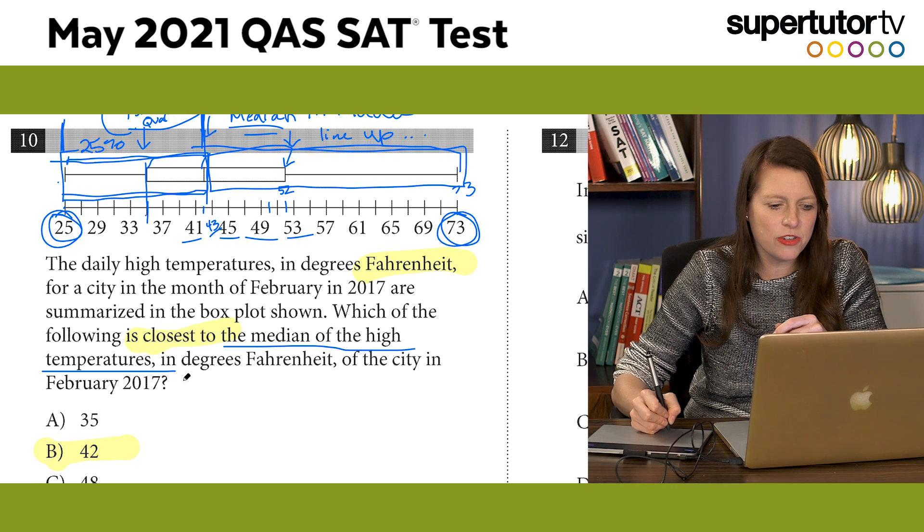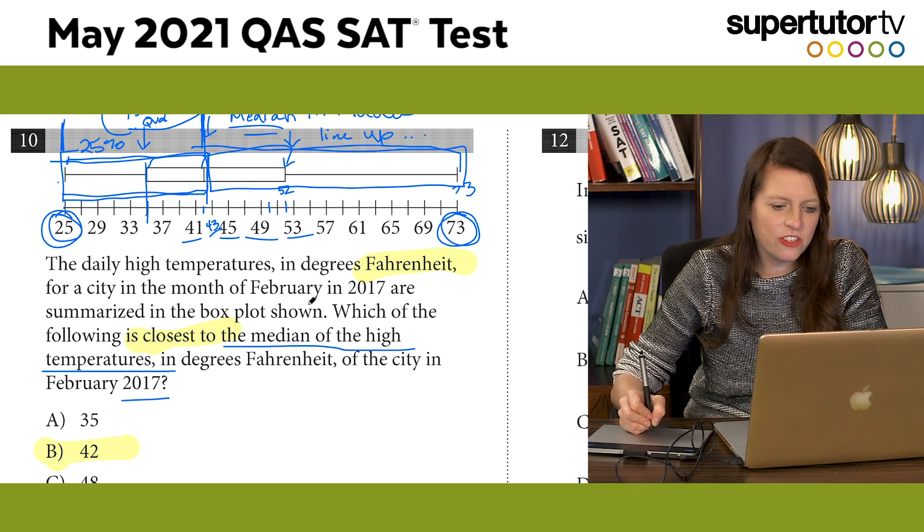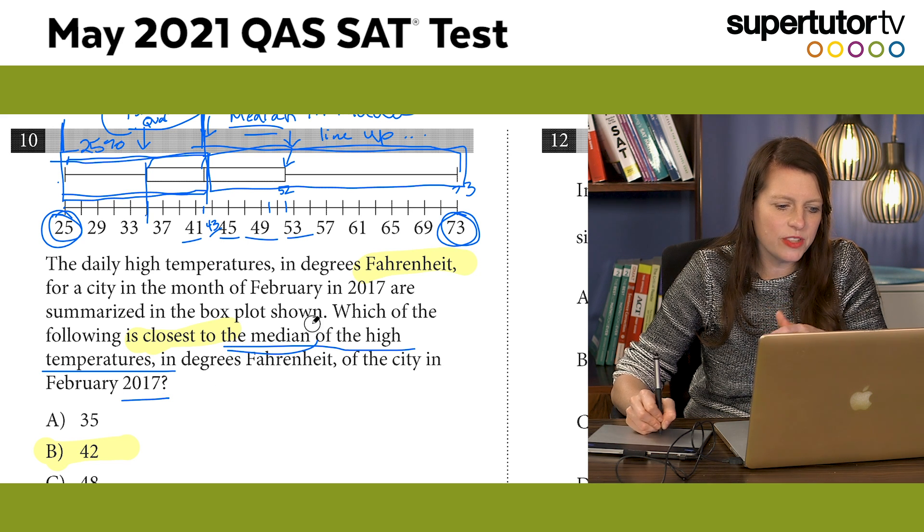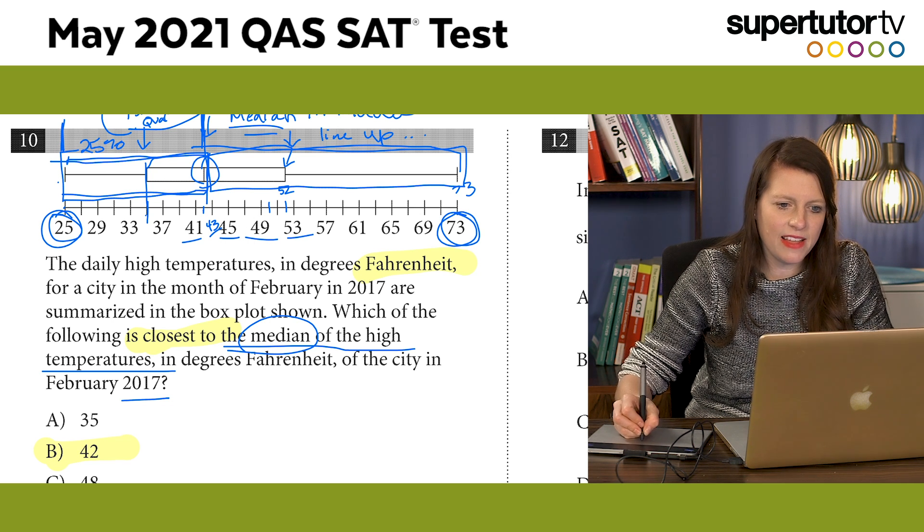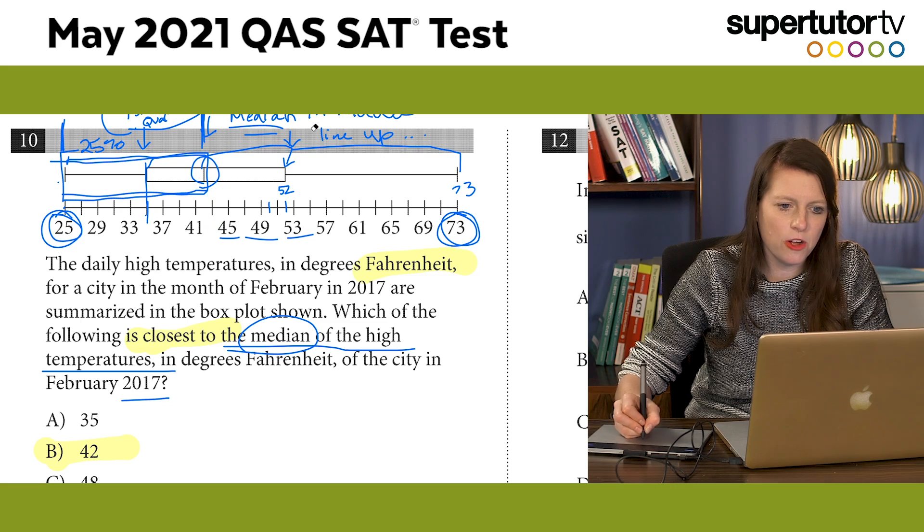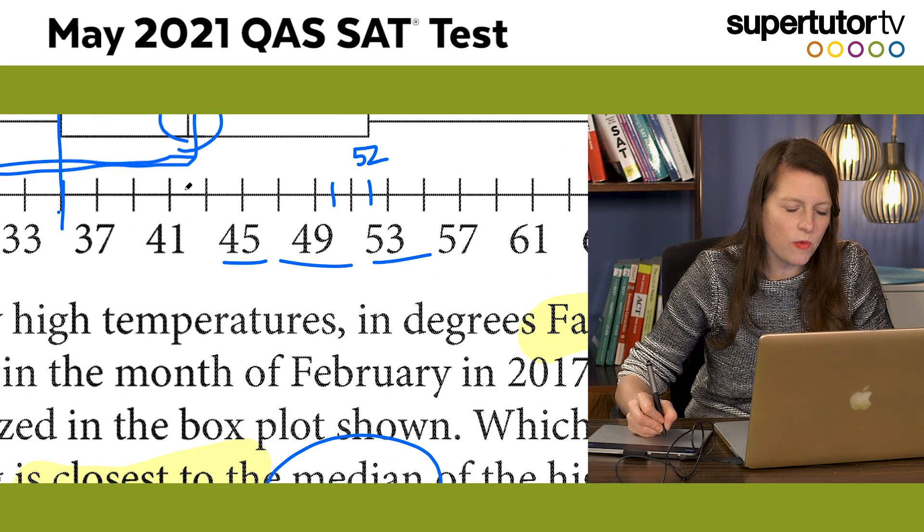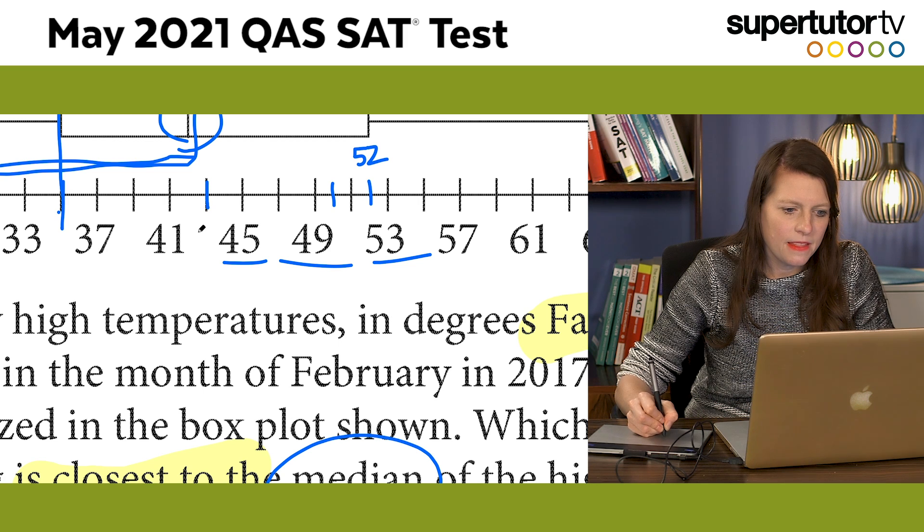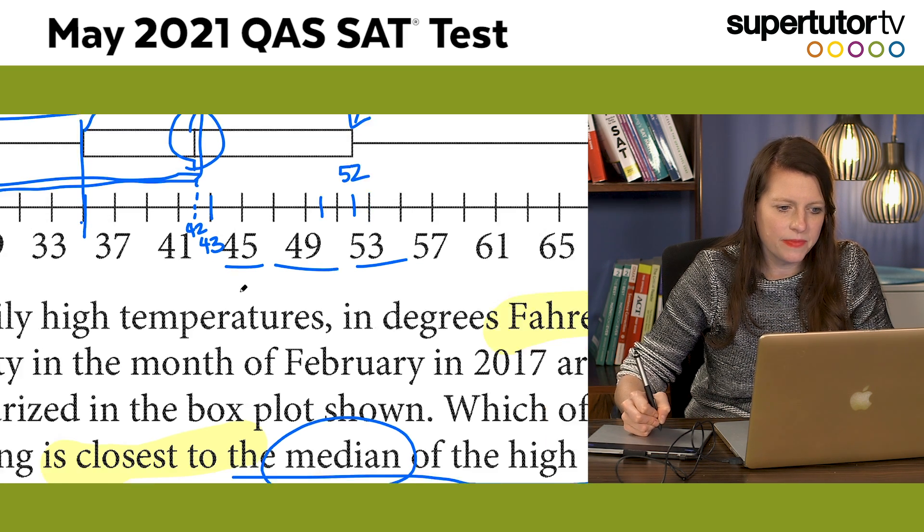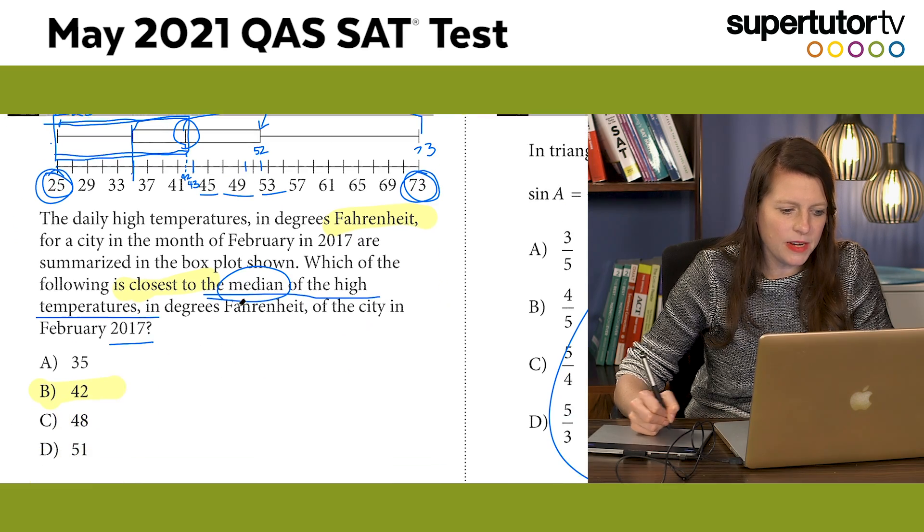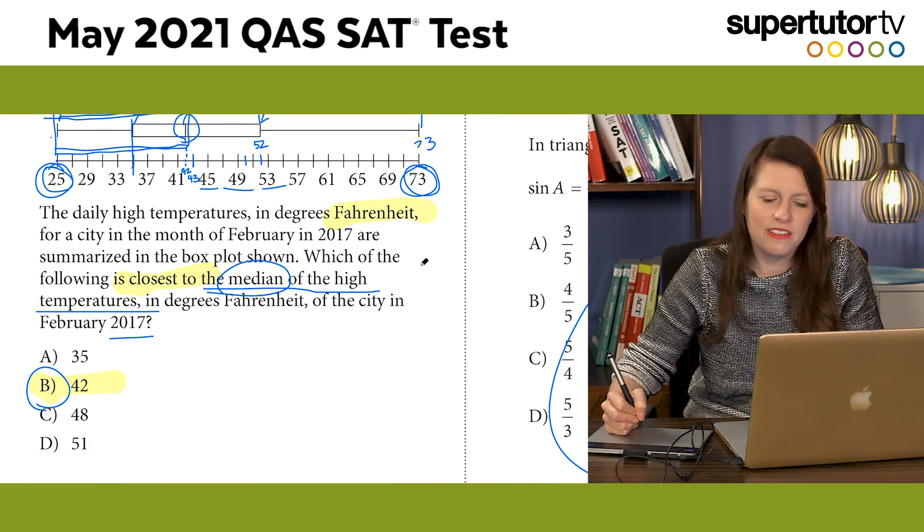We can solve this problem really quickly. What is closest to the median of the high temperatures of the city in February of 2017? And this is all just repeating data. So all we want is just the median. The median is just where this line is. So where is that line? Well, we've got to figure that out. Be careful because these are not one each, right? This is not 41 and a half. This is 43 and this is 42, okay? So I'm going to estimate it to be at 42 and that's B and we're done. But it's not that hard, right people?